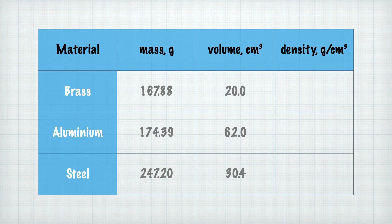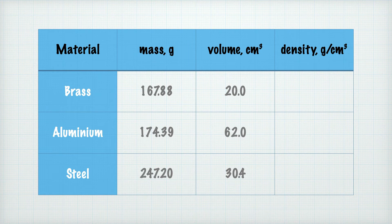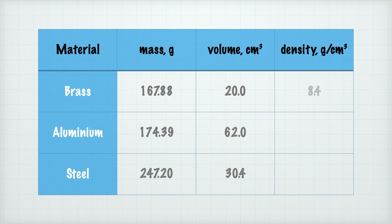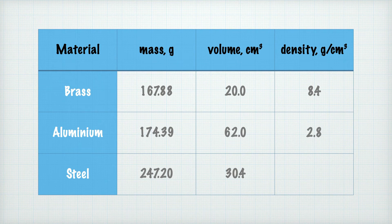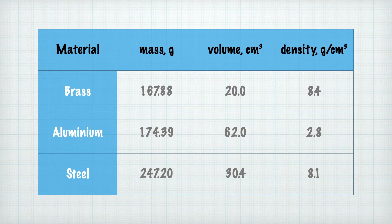Here I'll just write down the values of density to one decimal place which gives brass a value of 167.88 divided by 20.0 which is 8.4 grams per cubic centimeter. Dividing mass by volume for the other two blocks we get 2.8 grams per cubic centimeter for aluminum and 8.1 grams per cubic centimeter for steel.